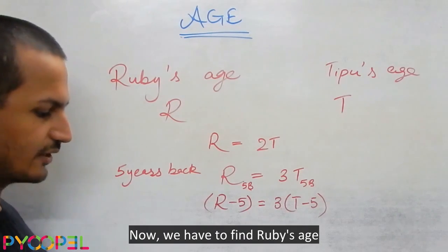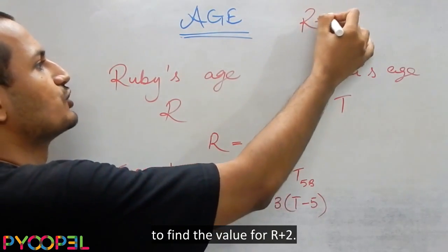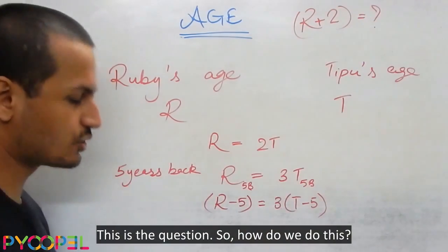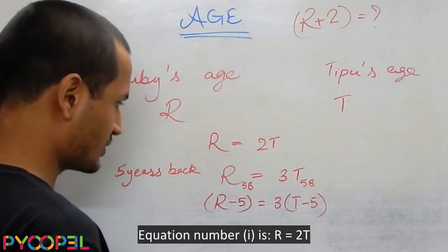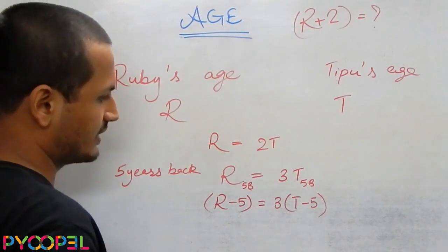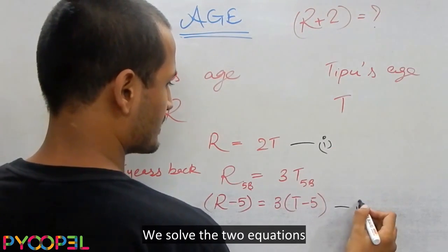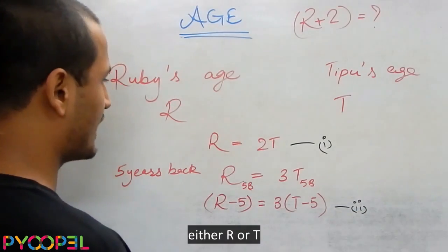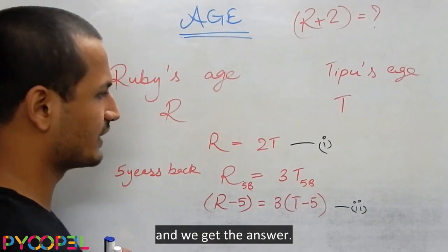Now we have to find Ruby's age two years from now. So we have to find R plus 2, the value for R plus 2. This is the question. So how do we do this? It's simple. We have two equations here. Equation number one is this, equation number two is this. We solve the two equations and we get the answer for either R or T, and then we put that in being R plus 2 and we get the answer.